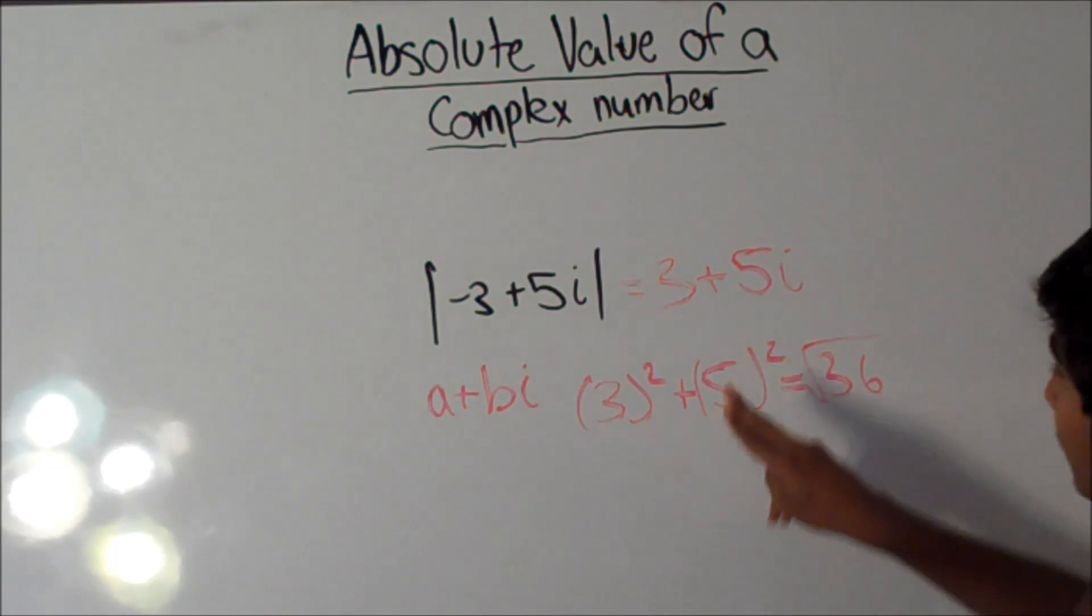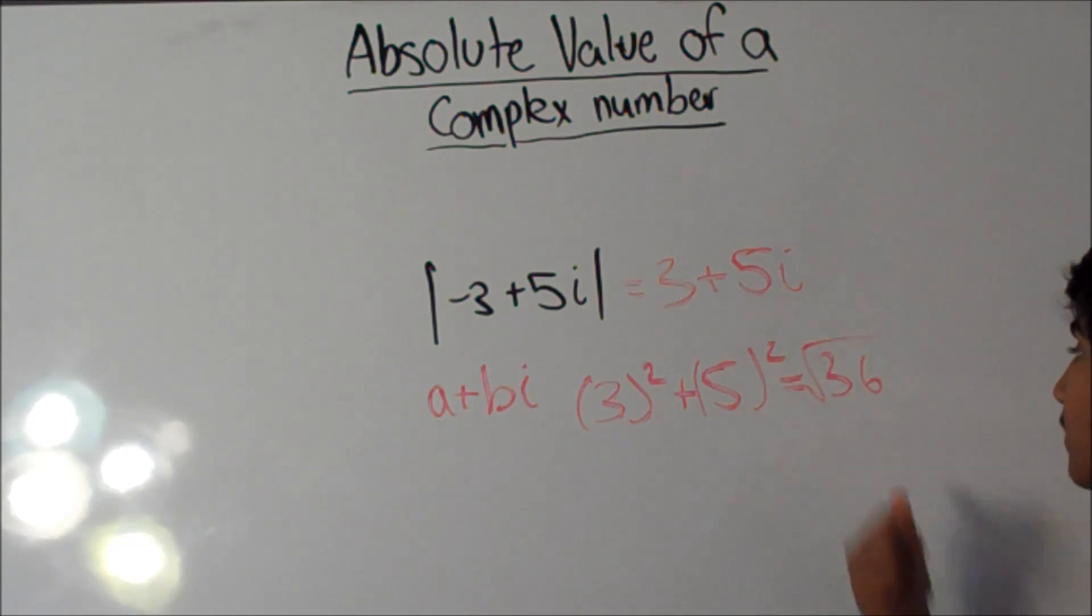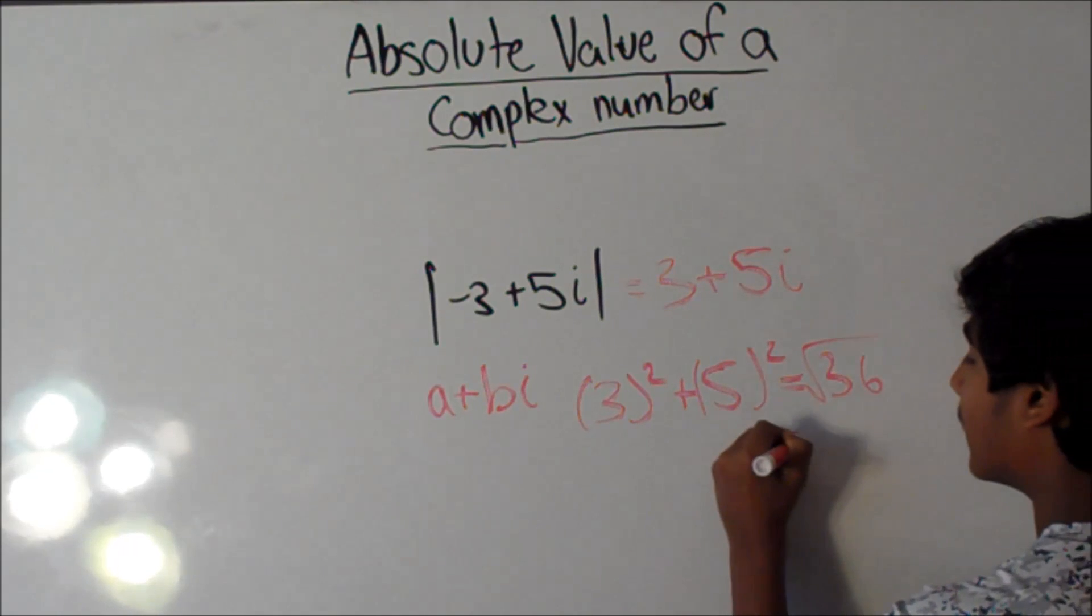Now, we have to find the square root of it, because we squared both of them. And we also need to square root this one. So, it would be 6.